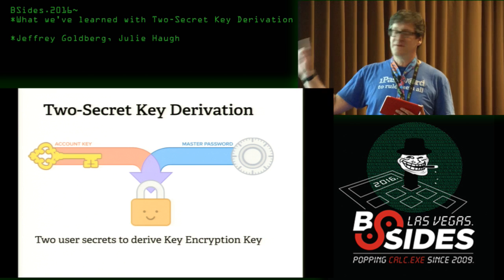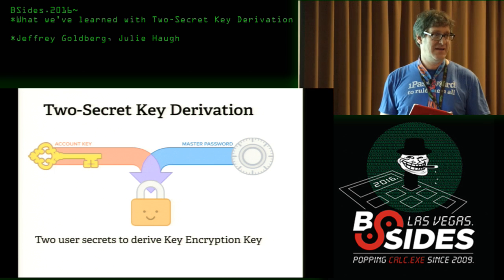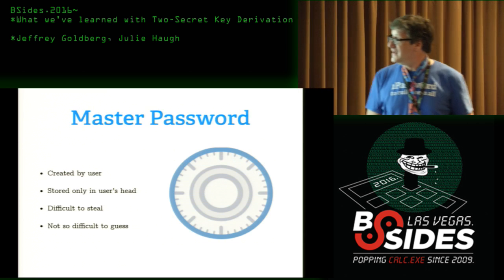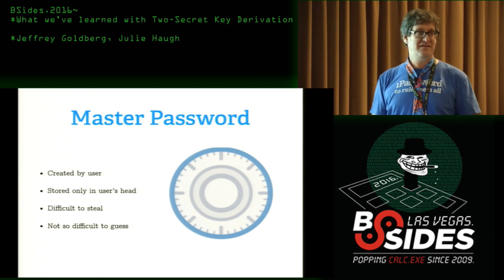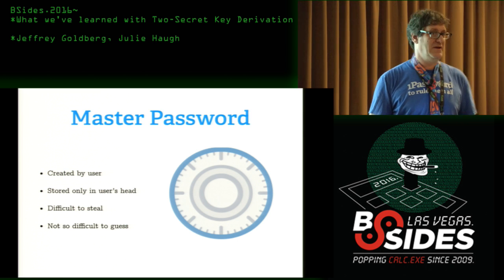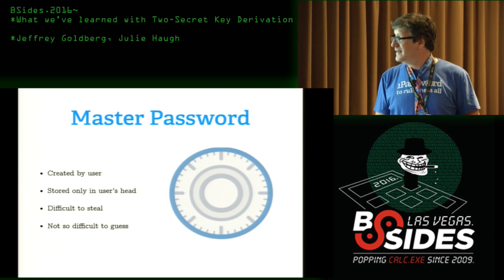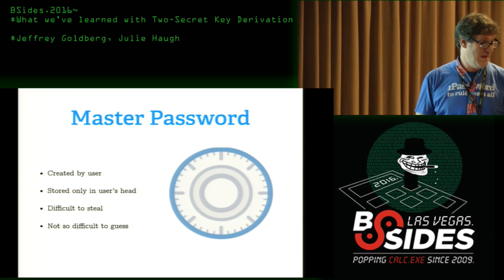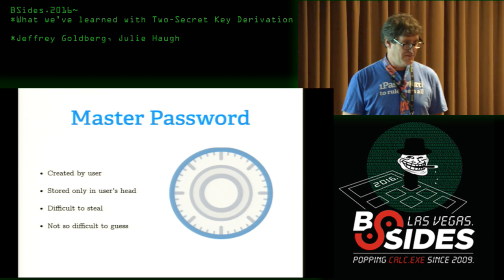We take two user secrets: a master password and something that we've called an account key — and I have no idea why we call it that. A master password is something that's more or less created by the user. It's stored only in the user's head, which makes it difficult to steal. It's a human-created password; they need to remember it, they need to type it. So it is not so difficult to guess.